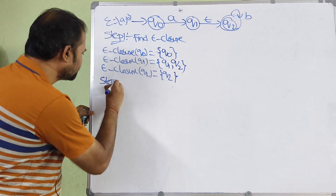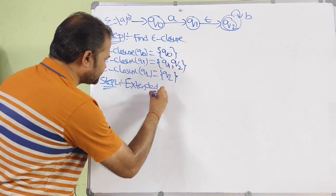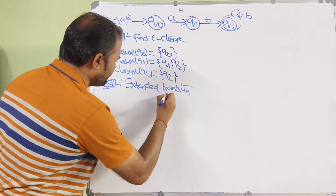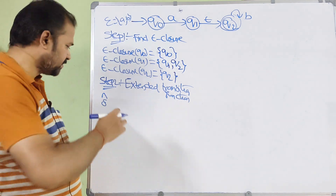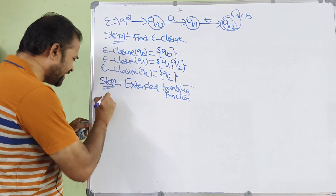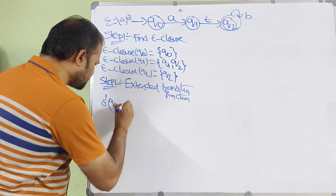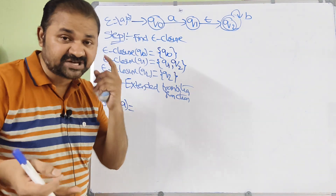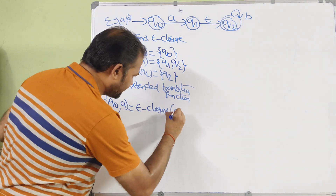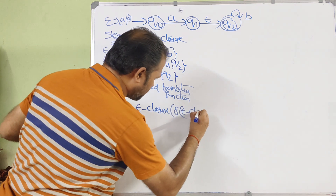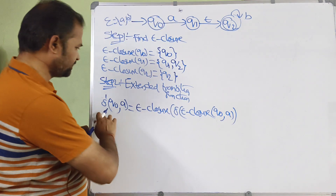Step 2 is to calculate extended transition functions, denoted by delta-bar (δ̄) or delta-dash. We need to calculate δ̄(Q0, A) and δ̄(Q0, B). The formula is: δ̄(state, input) = ε-closure of δ(ε-closure(state), input). For δ̄(Q0, A), we apply the formula: ε-closure of δ(ε-closure(Q0), A). Since ε-closure(Q0) = {Q0}, this becomes ε-closure of δ(Q0, A).